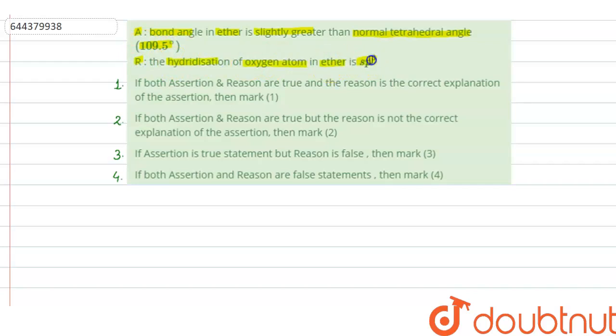So in this question two statements are given, assertion and reason. We have to check whether these are true or not and according to that we have to select one option. Four options are given.